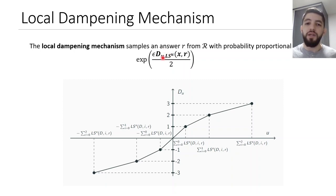So d is our dampening function. Our dampening function d dampens the utility function using the notion of local sensitivity, such that the resulting dampened utility function has low sensitivity and consequently has higher accuracy.